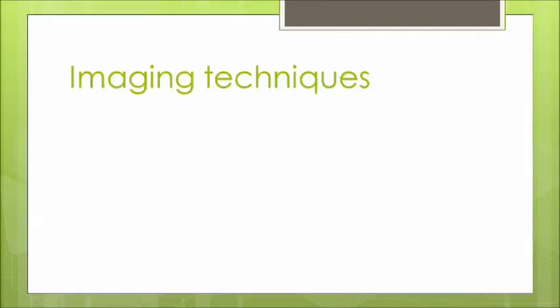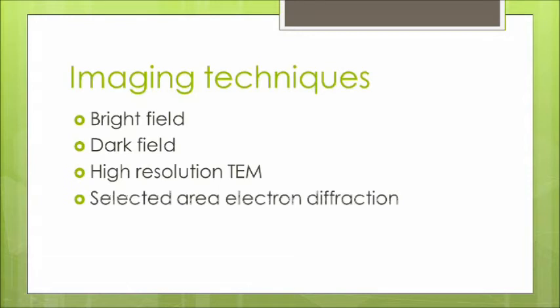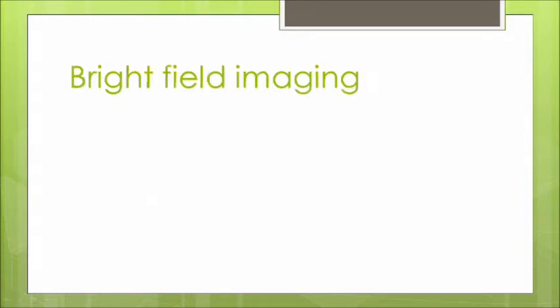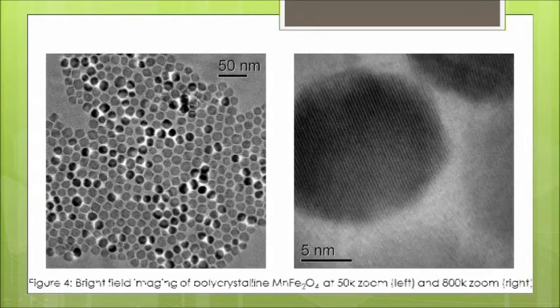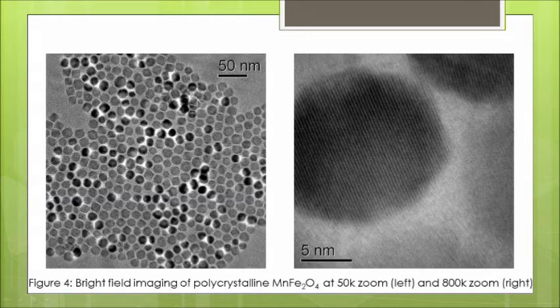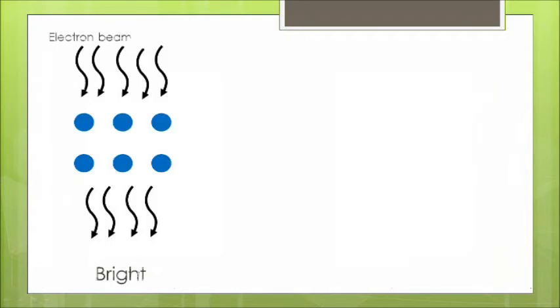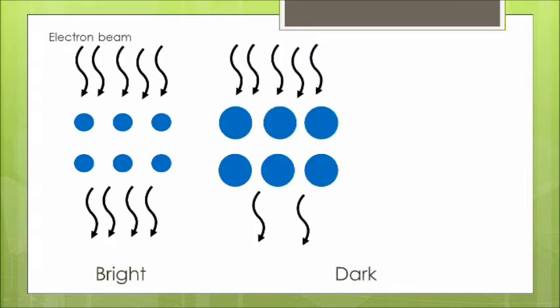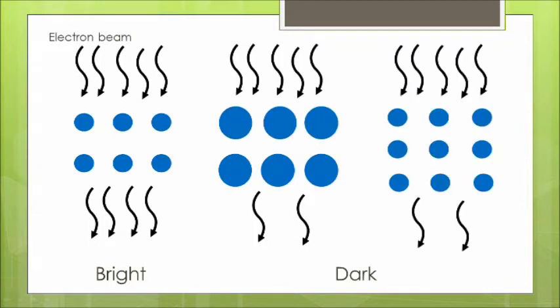There are different imaging techniques that one can employ with the TEM. The most common and simplest is the bright field imaging technique. This technique simply uses the transmission and absorption or scattering of electrons from the sample. The bright areas are where the electrons are able to pass through the sample, while the dark areas could represent areas with atoms of higher atomic mass, or simply a thicker area.